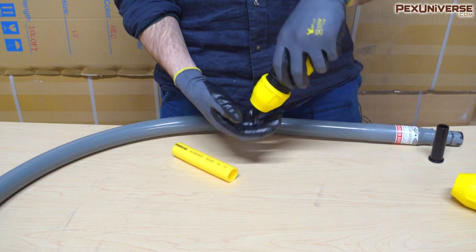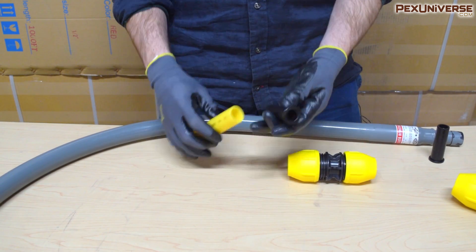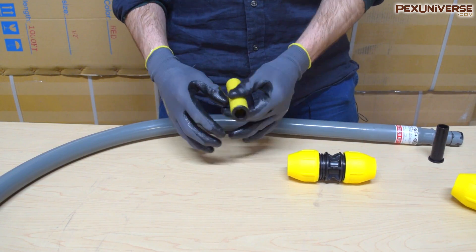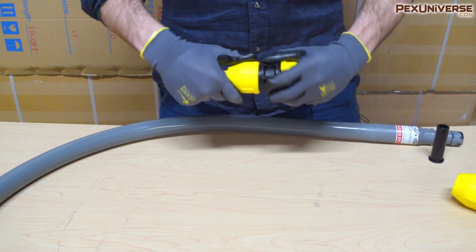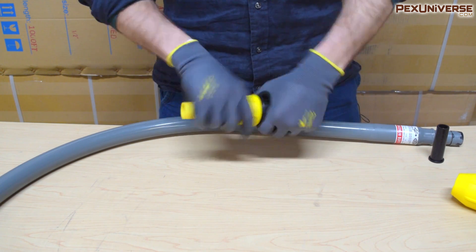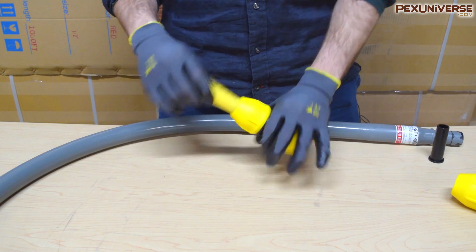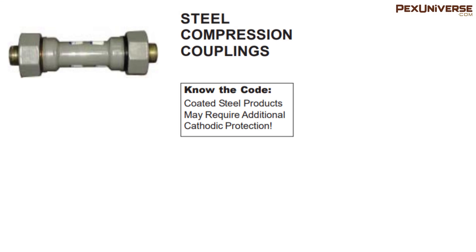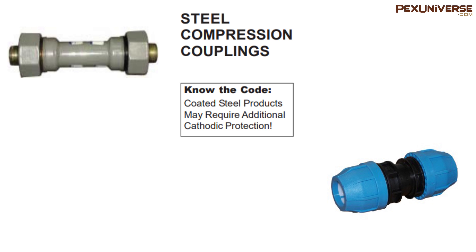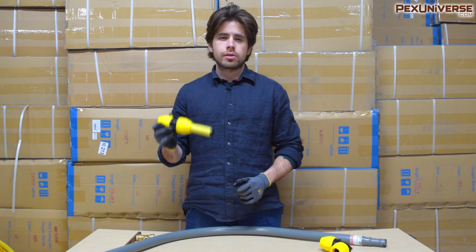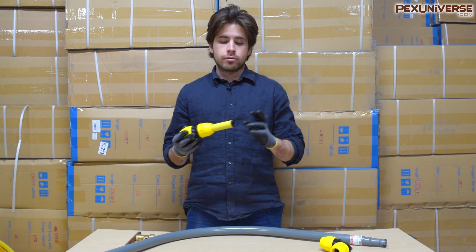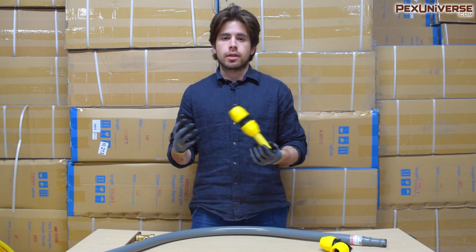Compression fittings are pretty straightforward — they work the same as compression fittings you'd find with copper or PEX pipe. They come with little pipe stiffeners: you unscrew it, take it out, put it into the pipe, and make your connection. Some fittings are made out of steel but more often they're made out of polypropylene, and both can connect PE pipe just the same. The biggest upside of compression fittings is that they're cost effective and you don't need to ream the pipe before making the connection.